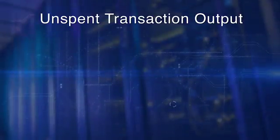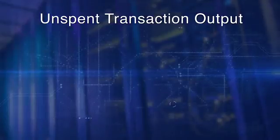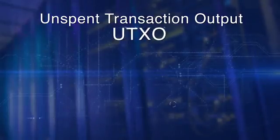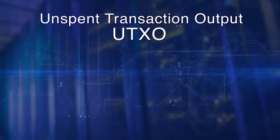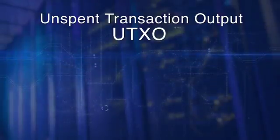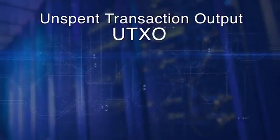Let's now discuss the details of a single transaction. In Bitcoin, a fundamental concept of the Bitcoin network is an unspent transaction output, also known as UTXO. The set of all UTXOs in a Bitcoin network collectively define the state of the Bitcoin blockchain.